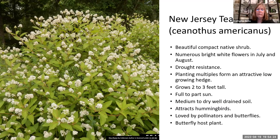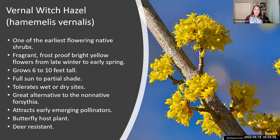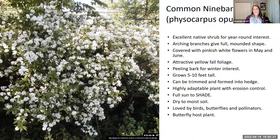Vernal witch hazel — if you're a fan of forsythia, which is blooming right now with those little yellow flowers, this is the perfect native alternative. It also has yellow flowers and blooms about this same time of year, growing about six to ten feet tall like forsythia. It's very tolerant of soil conditions — you can plant it in wetter or drier areas. It's one of the earliest food sources for the first pollinators to emerge in spring. It's also a butterfly host plant and deer resistant.